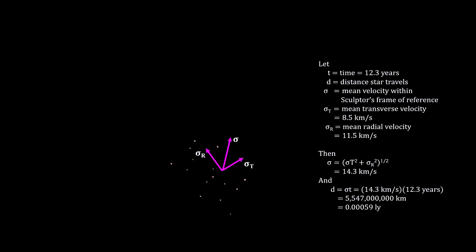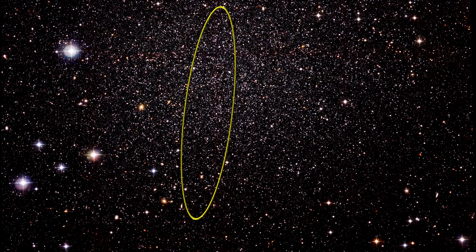The results show that the stars in Sculptor move preferentially on elongated radial orbits. This indicates that the density of dark matter increases towards the center instead of flattening out.